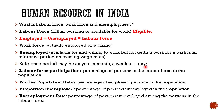The labor force participation rate is the percentage of persons in the labor force relative to the total population — it is the proportion of population which is in the labor force. The worker population ratio is the percentage of employed persons in the total population. The proportion unemployed is the percentage of persons unemployed in the total population. If you subtract the worker population ratio from the labor force participation rate, you get the proportion unemployed, since the base in all three is total population.